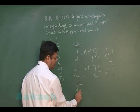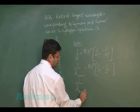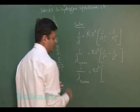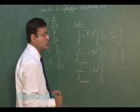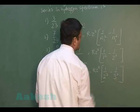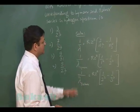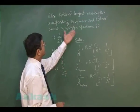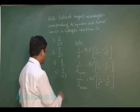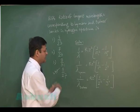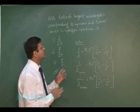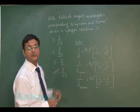For the Balmer series, the longest wavelength corresponds to a jump from n=3 to n=2, giving: 1/λ_Balmer = RZ² (1/2² minus 1/3²). Dividing these two expressions, the ratio of maximum wavelength of Lyman to maximum wavelength of Balmer comes out to be 5/27. That is the fourth option for question 174.